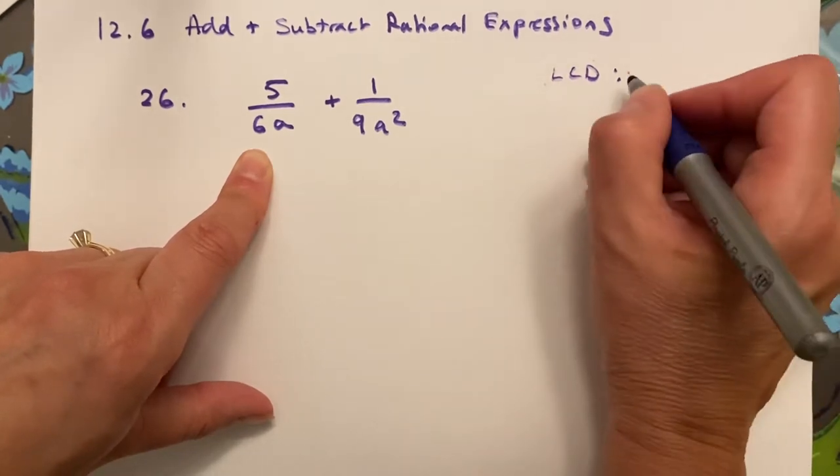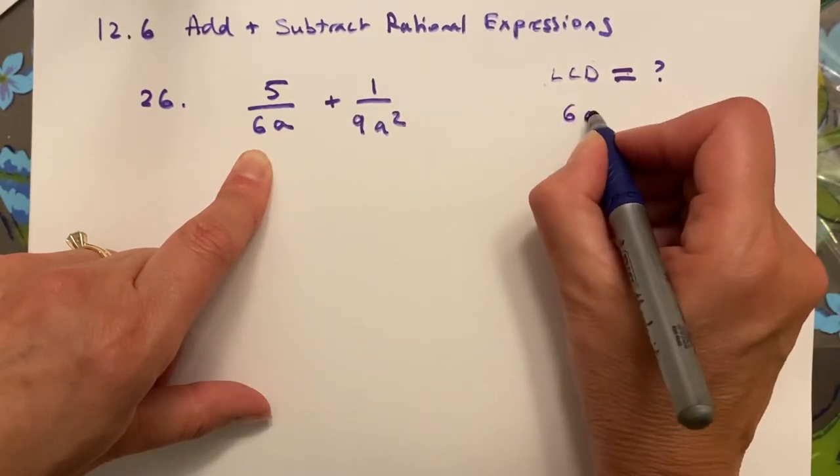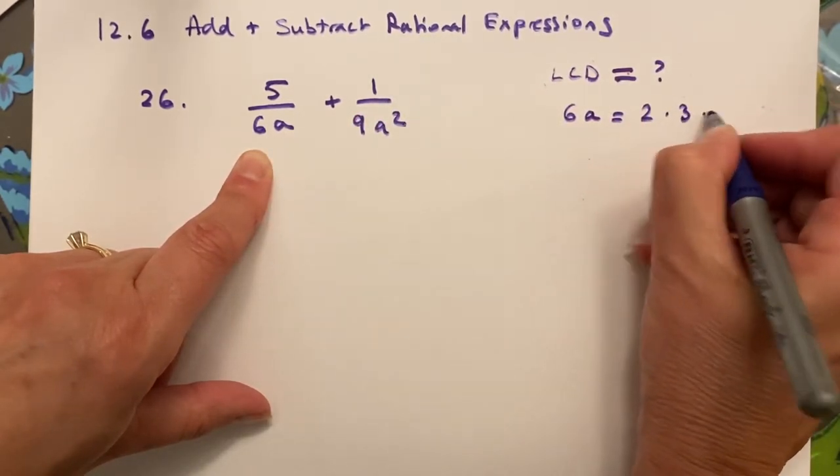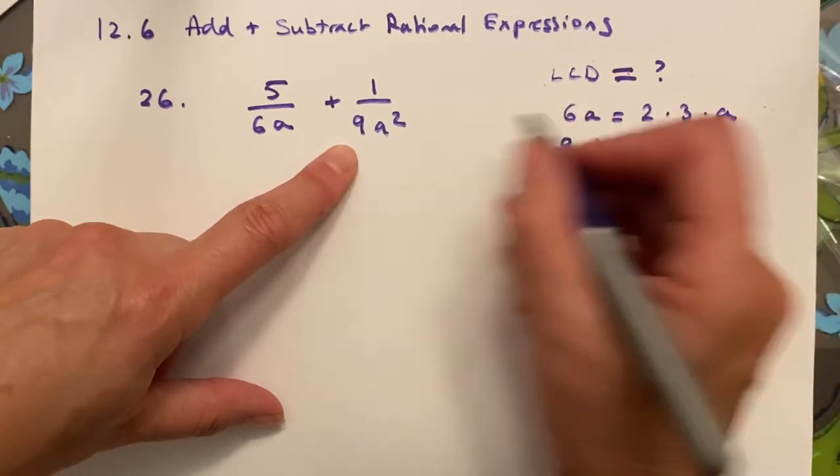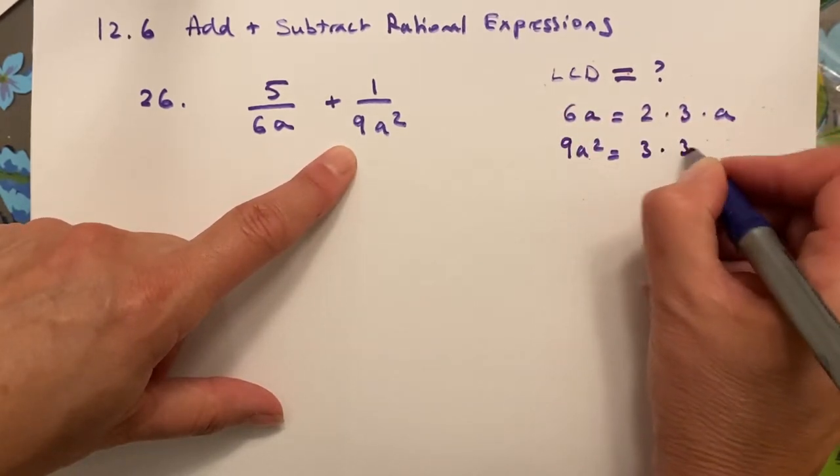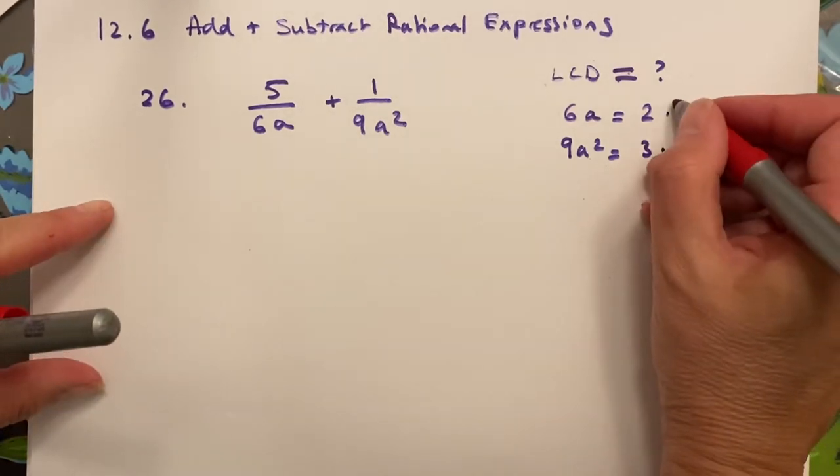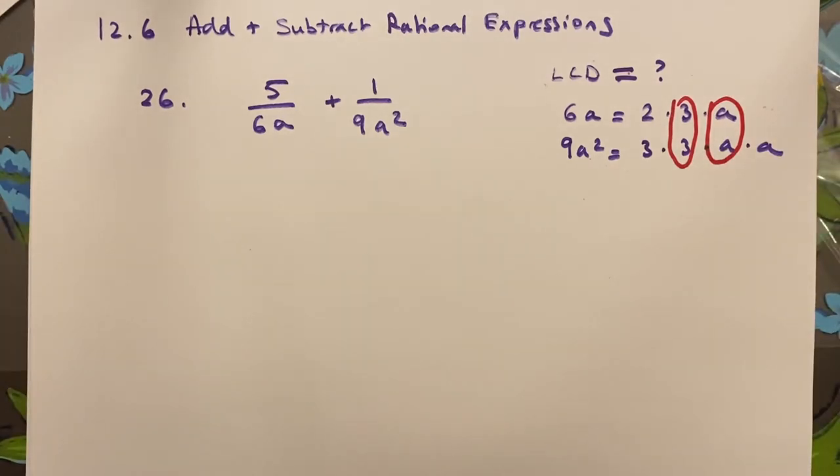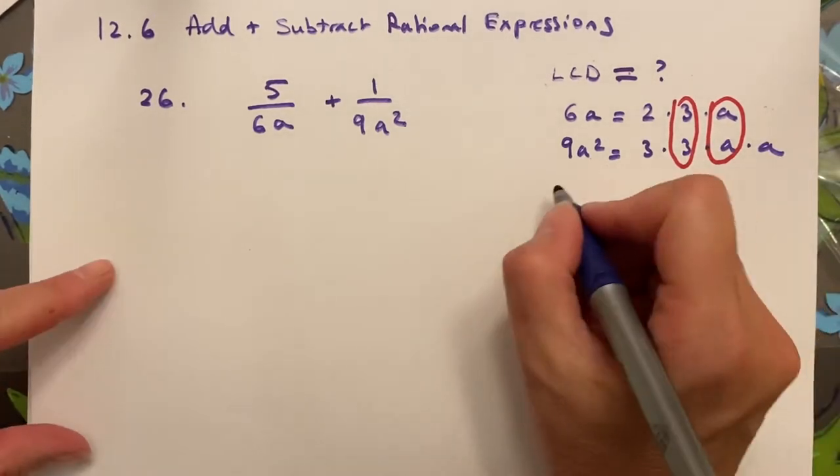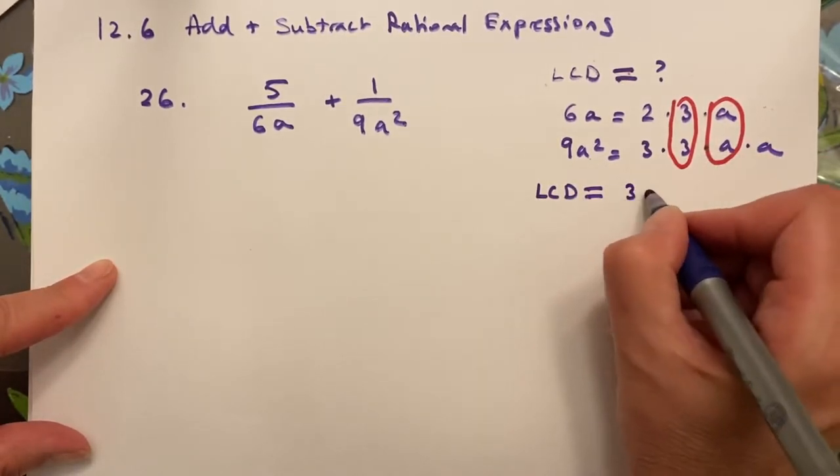To do that, I need to figure out what are my prime factors for 6a, and that is 2 times 3 times a. And do the same thing with 9a squared. And in this case, they are 3 times 3 times a times a. And if you remember how we did this, you find everything that's in common. So the 3 is in common between them and the a. And so my LCD begins with what's in common, and you only write that once, 3 times a.